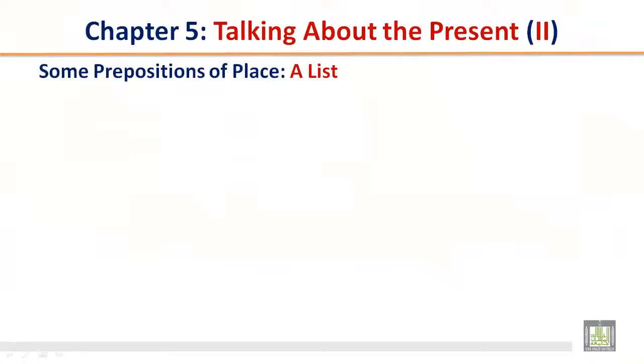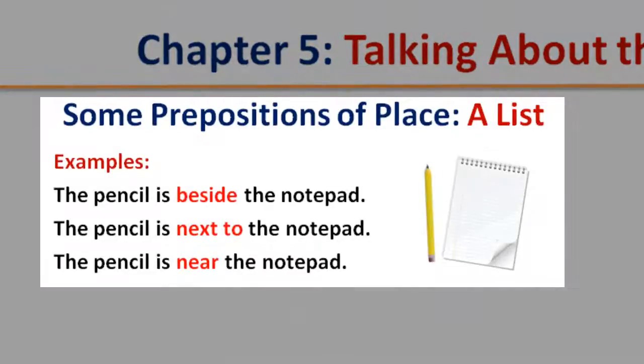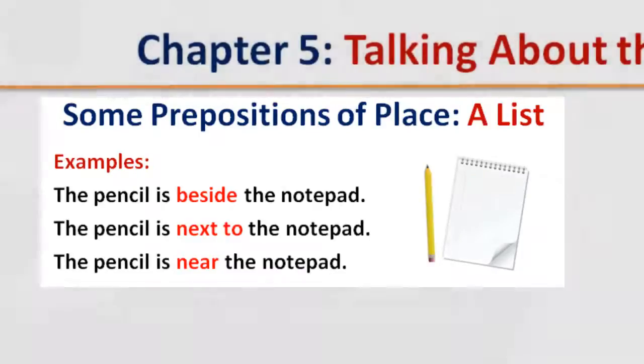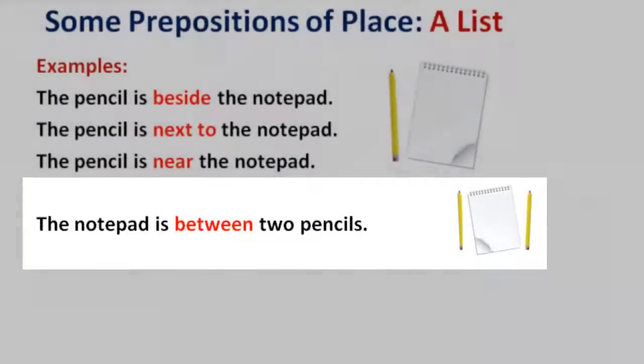Some prepositions of place, a list. Examples: The pencil is beside the notepad. The pencil is next to the notepad. The pencil is near the notepad. The notepad is between two pencils. The pencil is far away from the notepad.